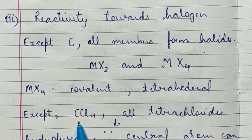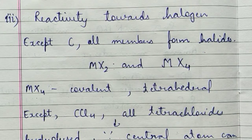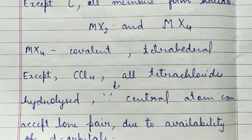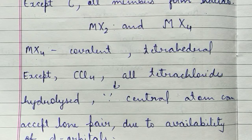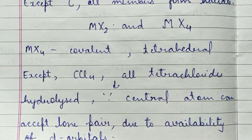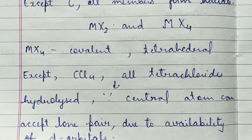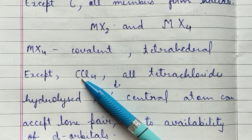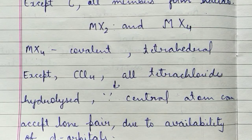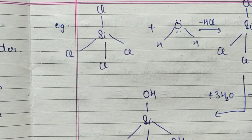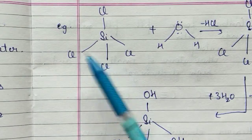All tetrahalides except CCl4 undergo hydrolysis — they react with water. This is because the central atom can accept lone pairs, as these elements have d-orbitals available. However, carbon does not have d-orbitals, so CCl4 cannot accept lone pairs and does not get hydrolyzed.